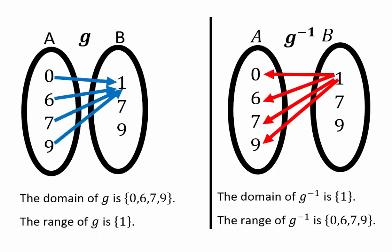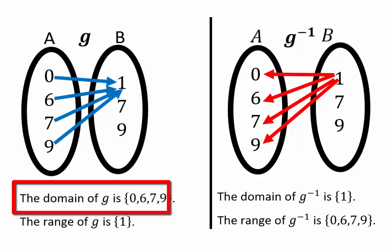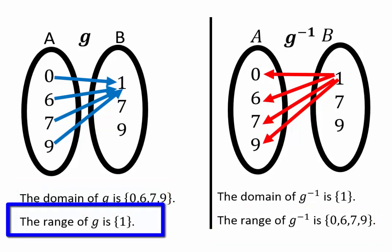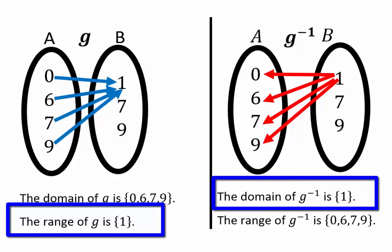Assuming you've come back, let's take a look together. Since in the original relation all the inputs landed on the output of 1, the output of 1 will now be related to all the inputs from the original relation. So we reverse the arrows and so the 1 in set B will now correspond to outputs of 0, 6, 7 and 9 in set A. So now our domain in the original which is 0, 6, 7 and 9 becomes the range in the inverse relation and the range of the original which was just 1 will become our domain in the inverse relation.